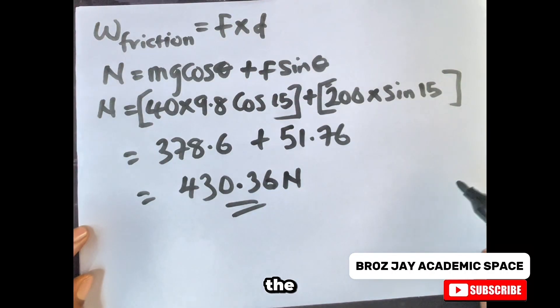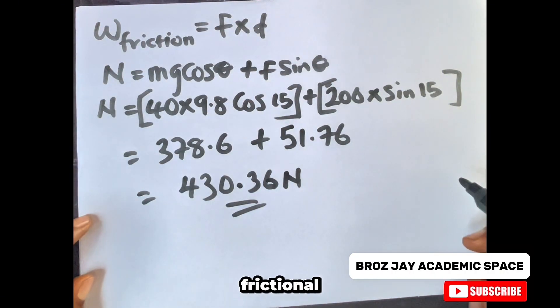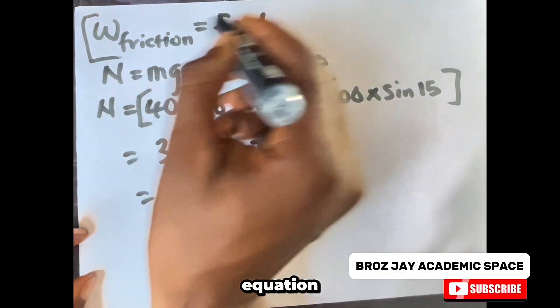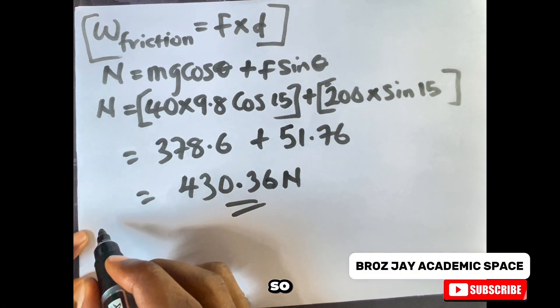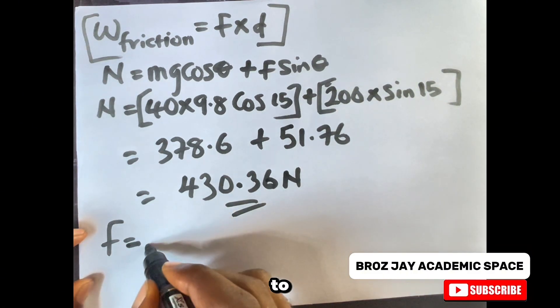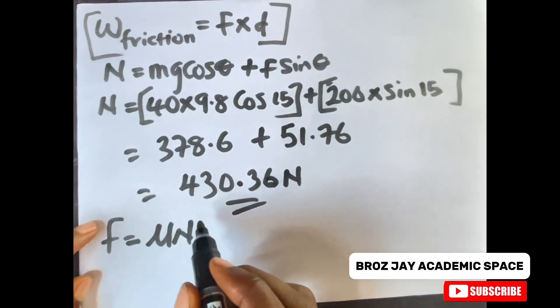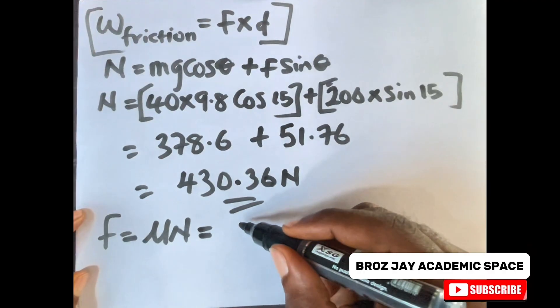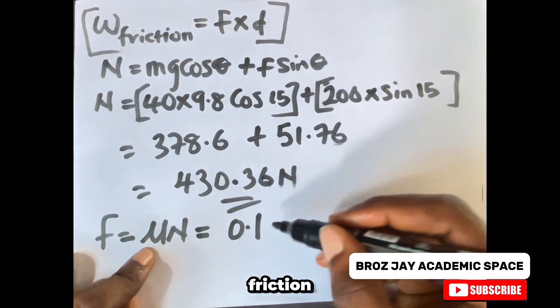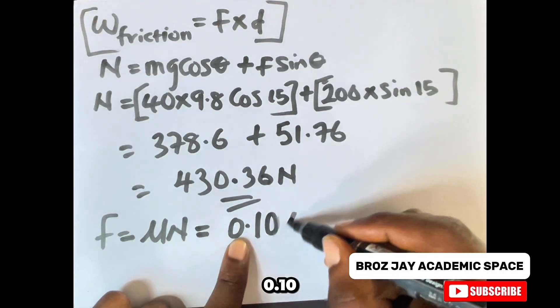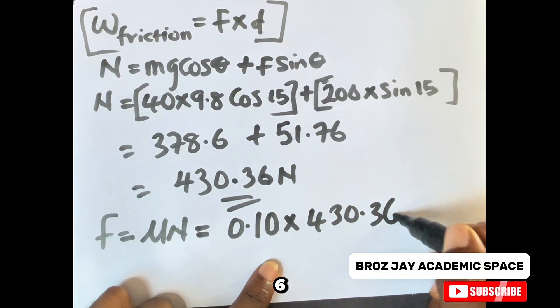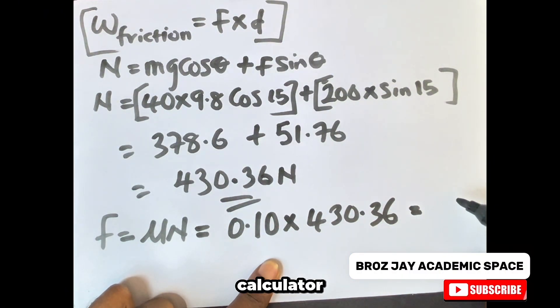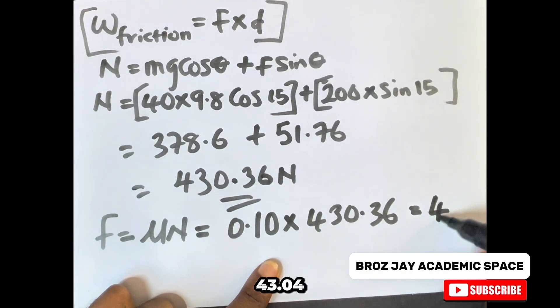You have gotten the normal force. The next thing you look for is the frictional force before you come back to this equation to solve for the work done against friction. The frictional force is given as f equals μN, which equals 0.10, the coefficient of friction, times the normal force 430.36. If you use your calculator, the final answer will give you 43.04 N.